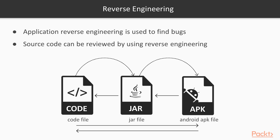This is called reverse engineering — it is just the reverse of the original process. Originally, it goes: source code → JAR file → APK file for Android. Reverse engineering means reversing all of that: the APK file is converted back into a JAR file, and the JAR file is converted back into source code files. The source code can then be reviewed, and you can find what the developer created, what they typed, and what programming languages the app has used.